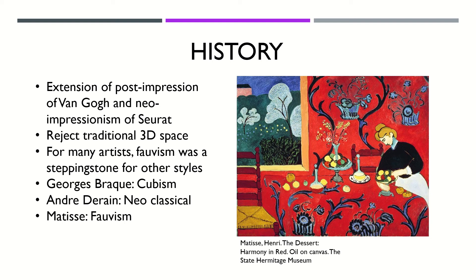However, for these artists they used Fauvism as a stepping stone to other developments. For example, Georges Braque went on to develop Cubism and André Derain turned towards Neo-Classical art styles. However, Matisse continued to use Fauvist art styles.